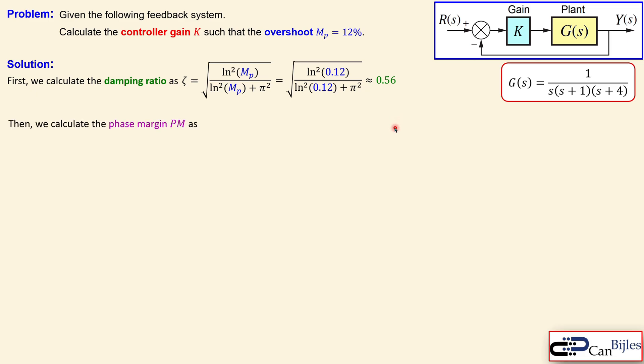Now we need to evaluate the phase margin using this damping ratio. The phase margin PM is then calculated using this formula: arctangent of this quantity. When you set up your phase margin equation, you see already that you need a damping ratio. We have the damping ratio and can now substitute that value. When you do that, you will get 56.4 degrees.